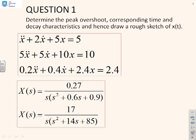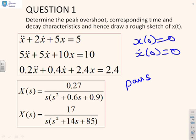Question then. Determine the peak overshoot, corresponding time, and decay characteristics, and hence draw a rough sketch of x(t) for the following. And again, we'll remind you, we're assuming zero initial conditions. So now's the time to pause this video while you try these questions by yourself, and I will go through some sketch solutions.